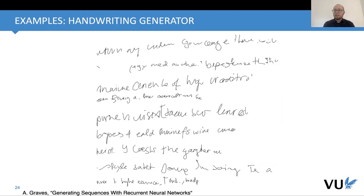Among the best applications that really changed the field: one extremely successful one was a handwriting generator. Alex Graves proposed in his PhD thesis a recurrent neural network that was able to generate a sequence by picking a style. We have a neural network trained on different styles, and depending on what style we want to achieve, it will generate any sequence that we want.